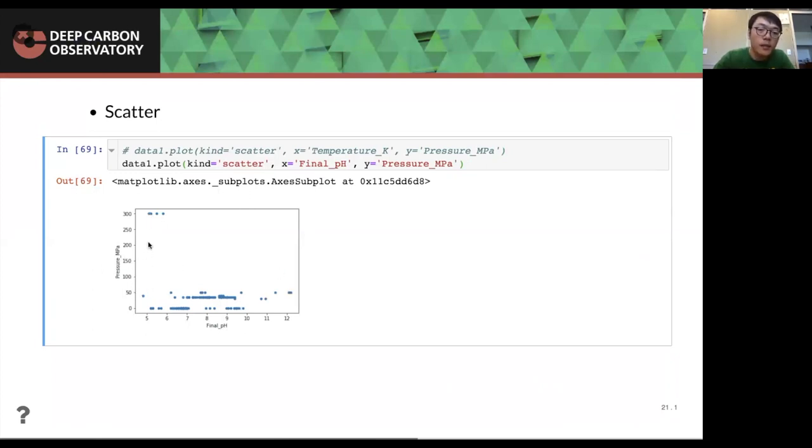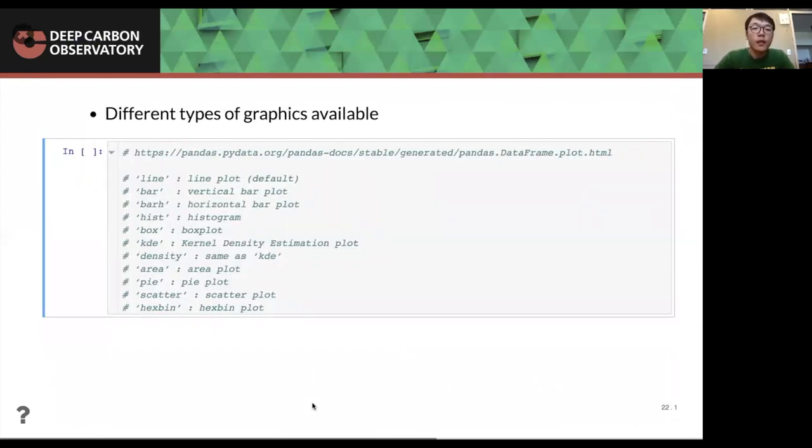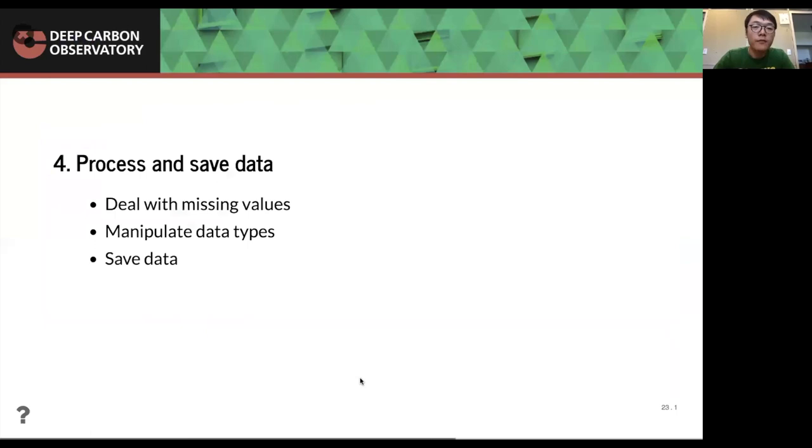And the later, after we deal with the temperature K column, the problem in this column, we will see how to, we will see a successful plot of scatter. Here is another, all the different types of graphics available in Panda data, Panda's data frame, the line bar, bars, histogram, and all of these. If you are interested, you can go to this website to look into the details. After inspection, we will do some processing and processing on the data and then save the data.